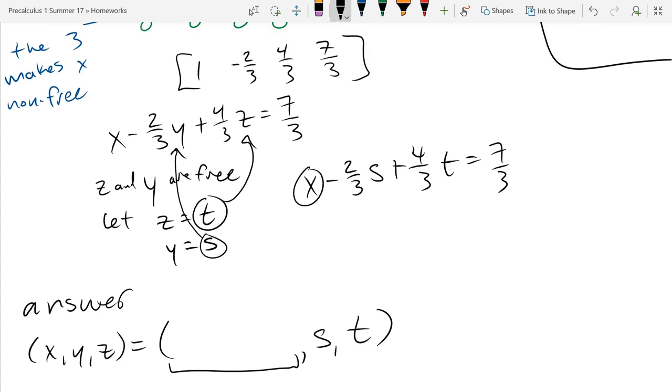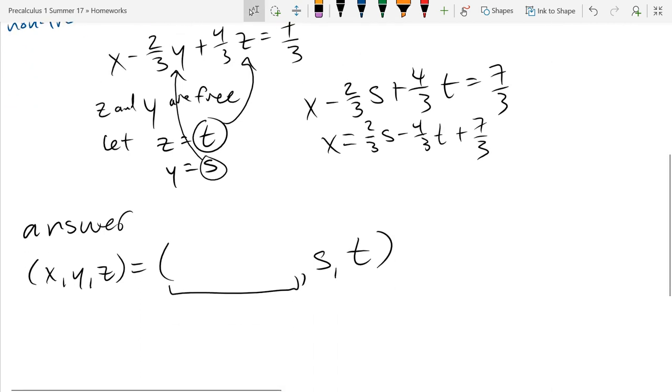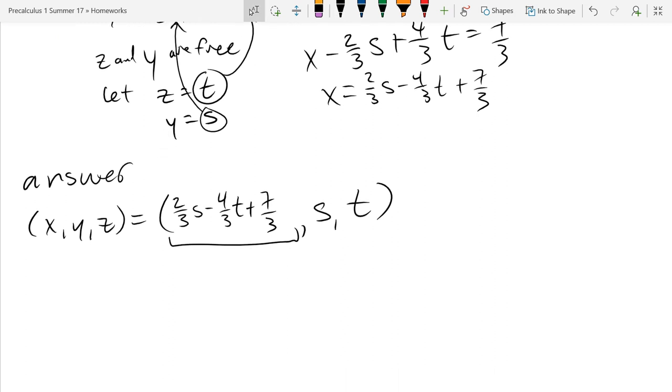I have x here, I need to solve for x. So I need to get everything else out of here. x equals plus 2 thirds s minus 4 thirds t plus 7 thirds.